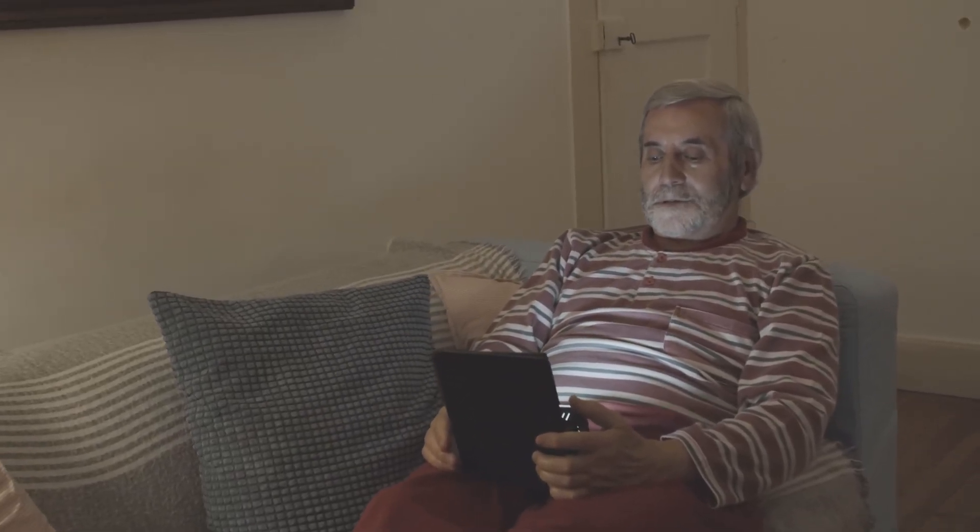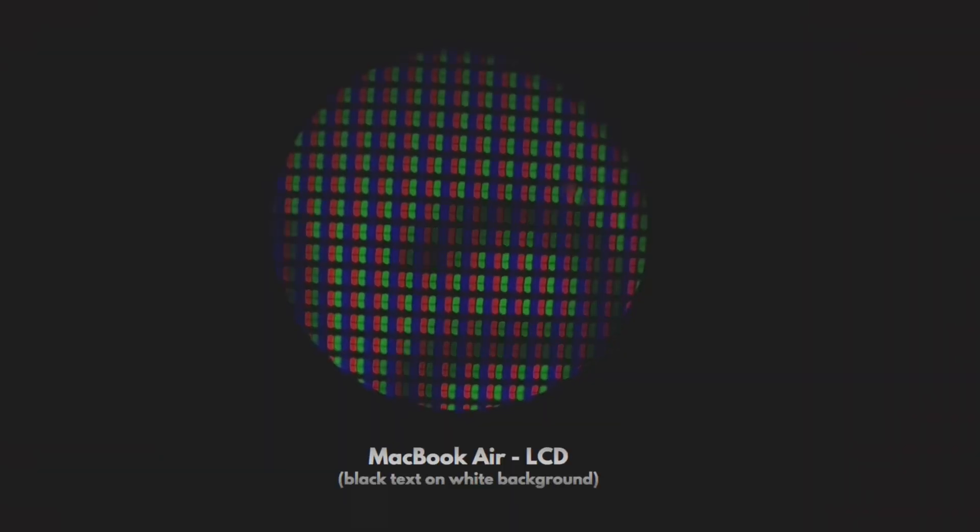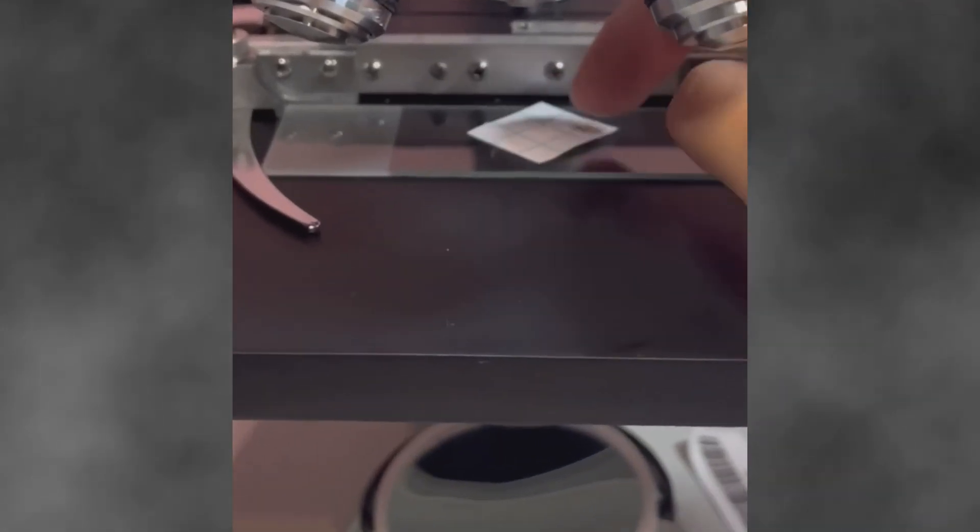Now, why aren't the pixels perfectly aligned like on LCD or OLED screens? Well, having slightly irregular pixel shapes makes text and images look more like printed material. If you zoom in on an LCD, squares and straight lines are perfectly aligned. But an e-ink screen, much like real paper, has a more organic, less rigid arrangement. This is one reason why e-ink displays are so pleasant to read on. They mimic the imperfections of ink on paper.